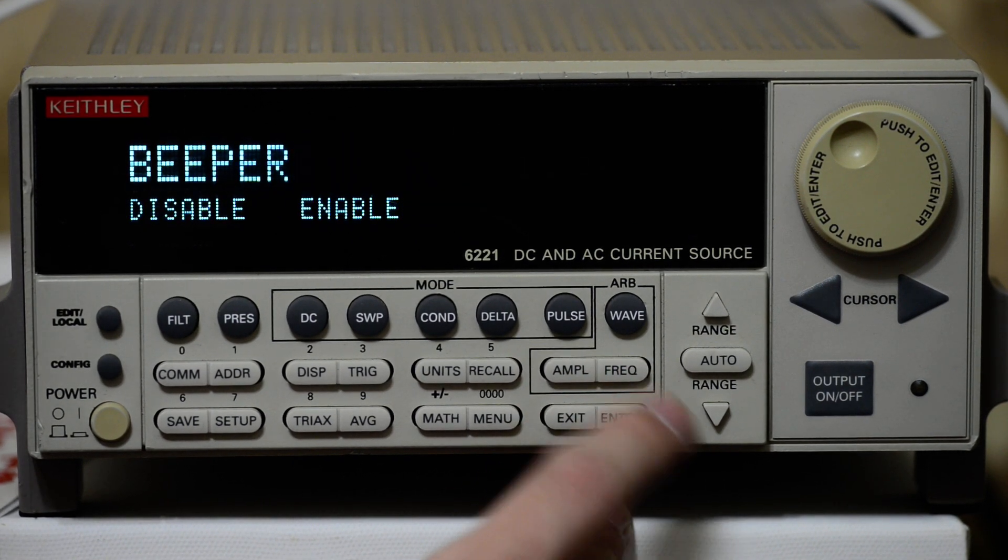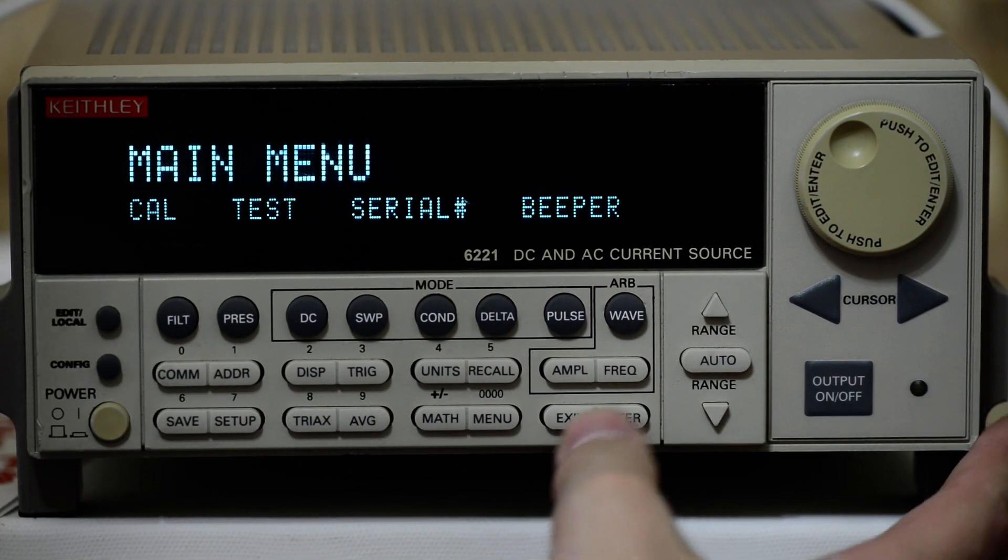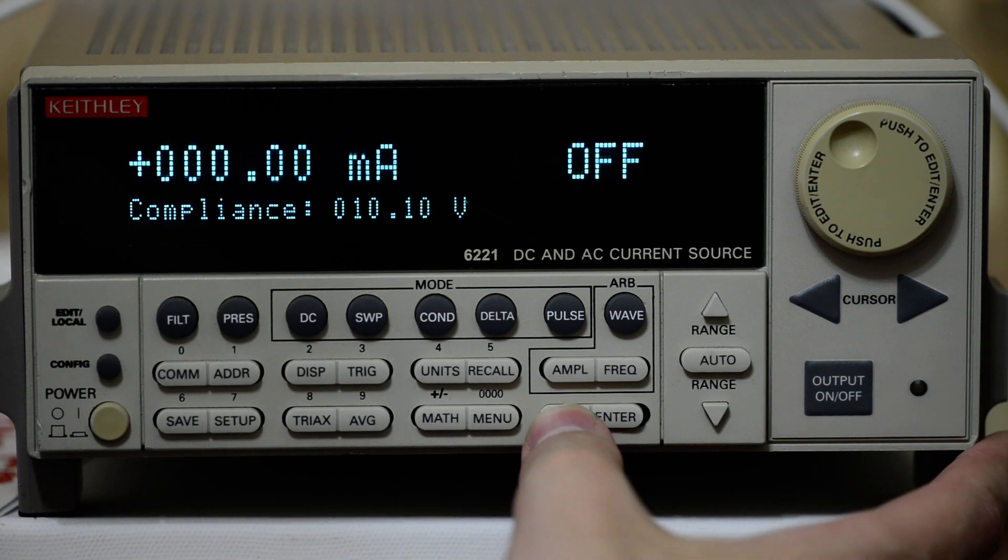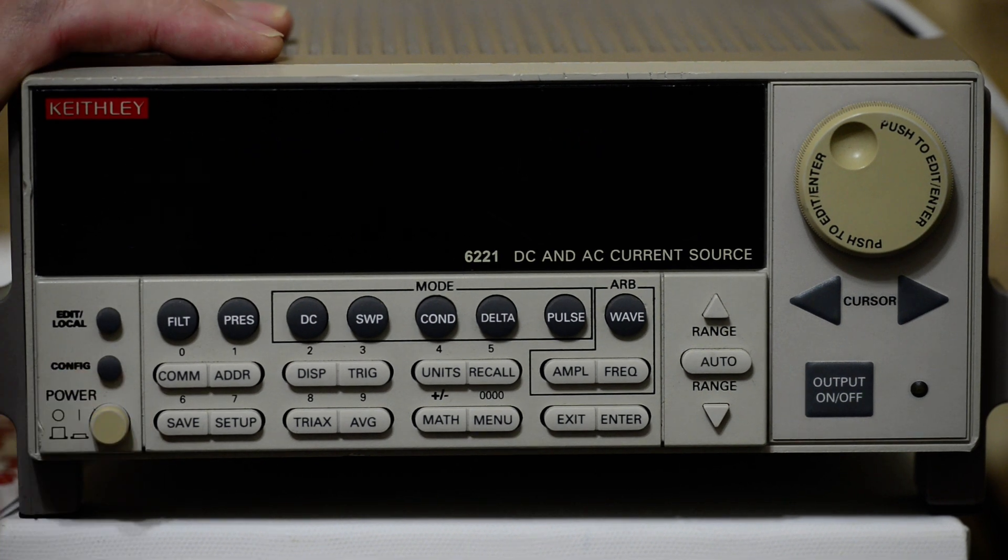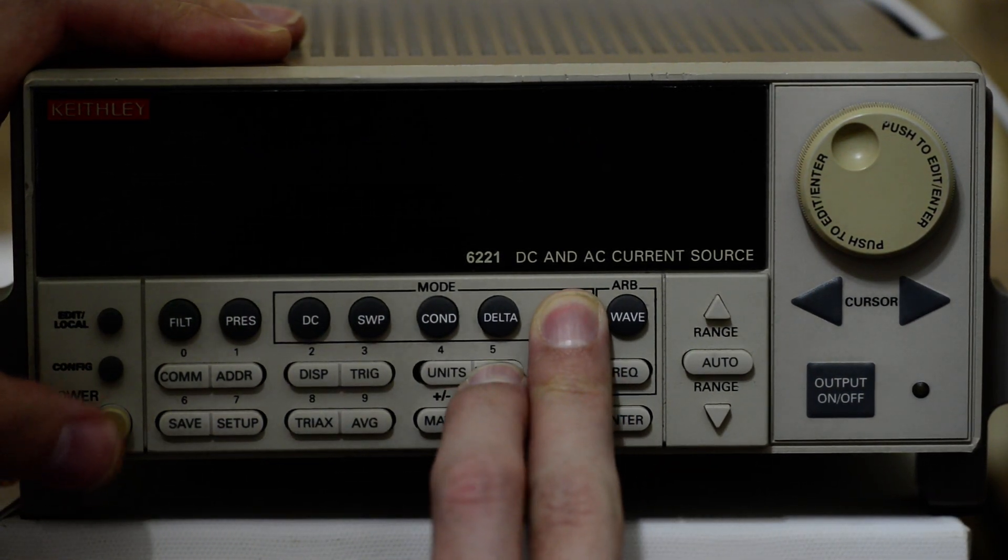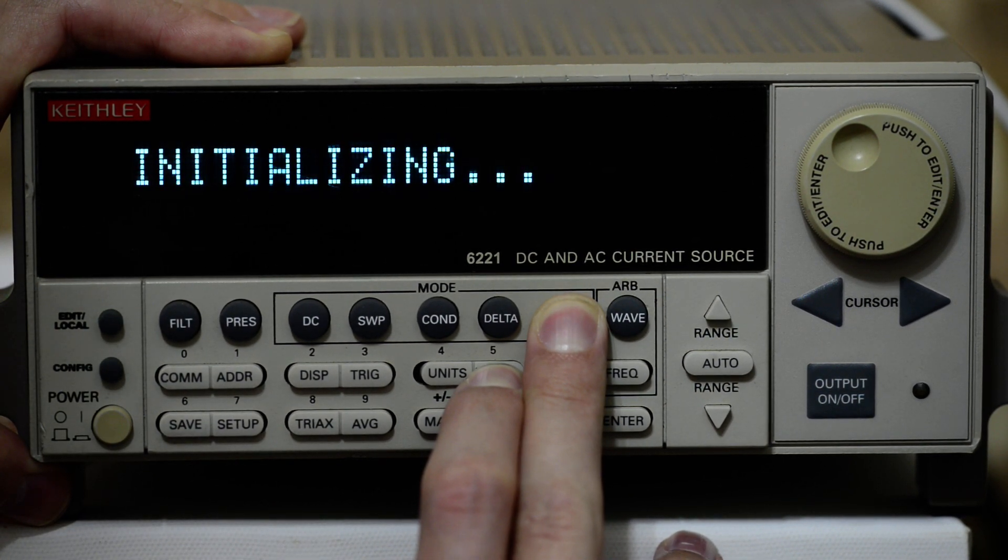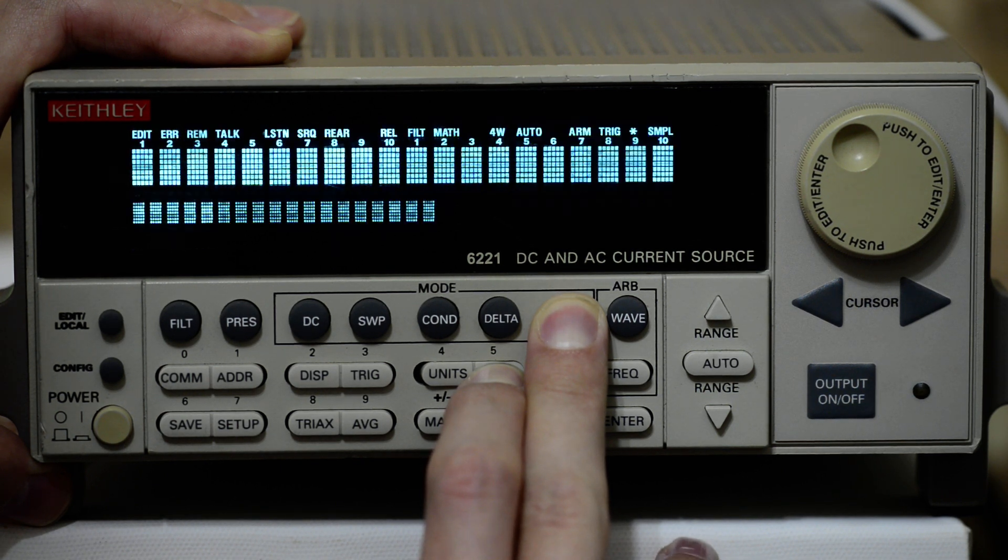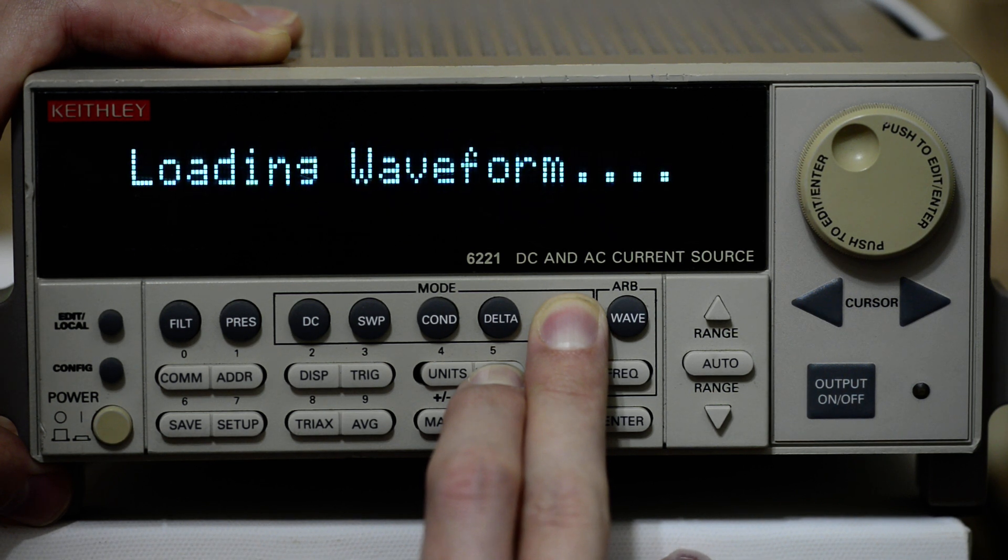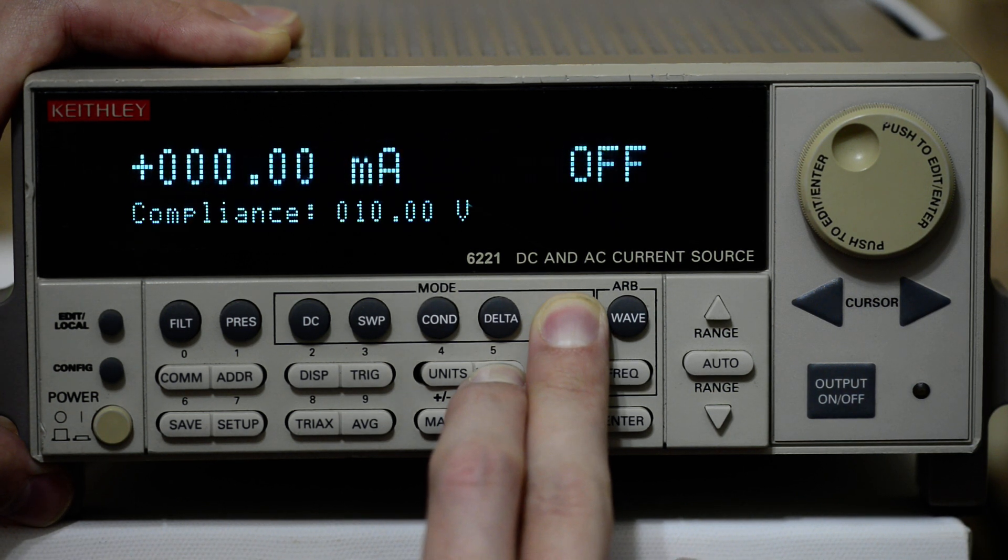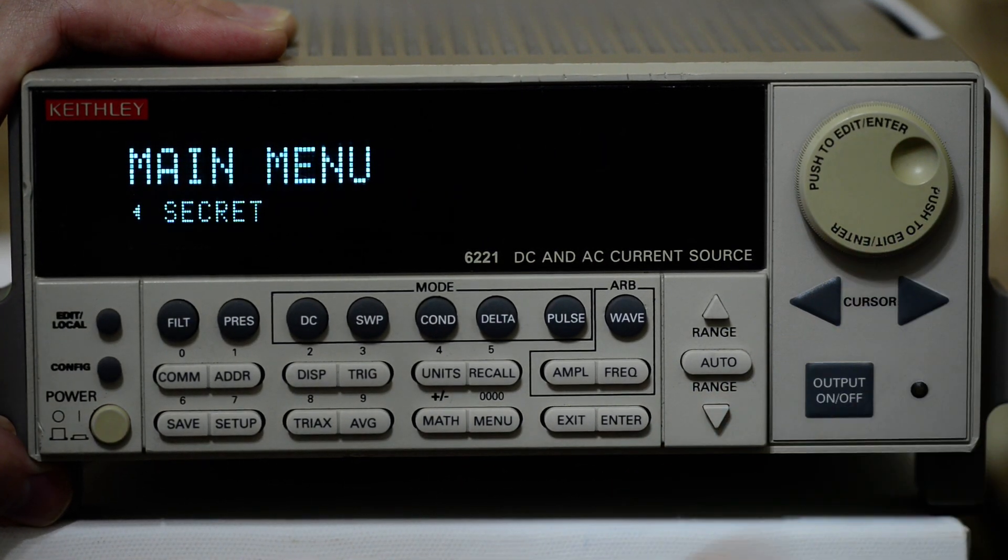And what we want to do is enter the secret menu. You can disable the beeper if you want. To do this, we need to press pulse and recall and power on the unit, keeping these two buttons pressed. It's both usually. But now we can go and enter the secret menu.